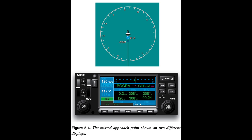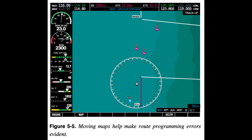Catching Errors: Using the Moving Map to detect route programming errors. Moving maps are particularly useful for catching errors made while entering modifications to the programmed route during flight. Misspelled waypoints are often difficult to detect among a list of waypoints. The Moving Map in Figure 5-5 shows a route containing a misspelled waypoint. It is easy to detect the mistake when the information is shown pictorially. For this reason, a display such as a Moving Map is sometimes referred to as an error-evident display.